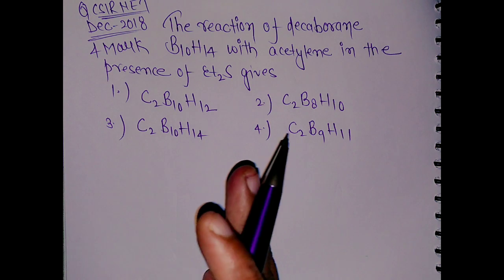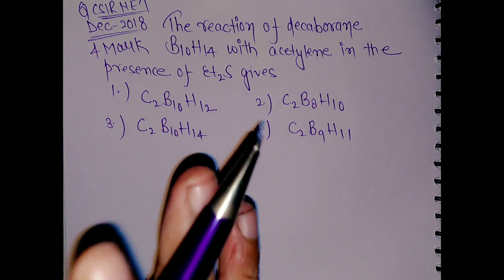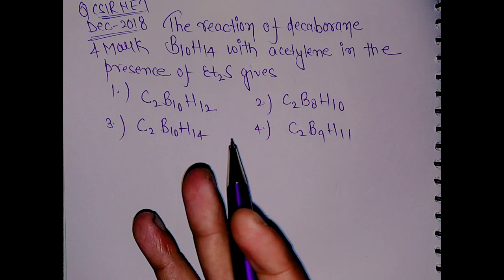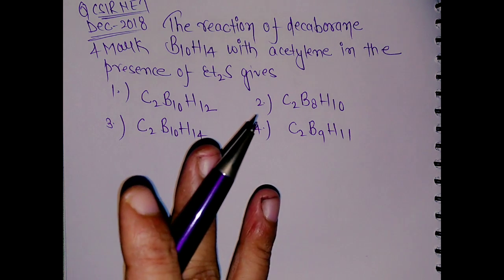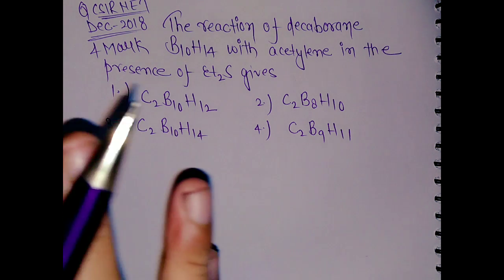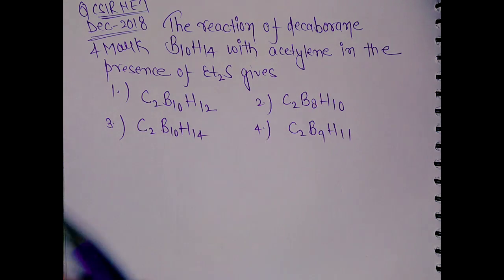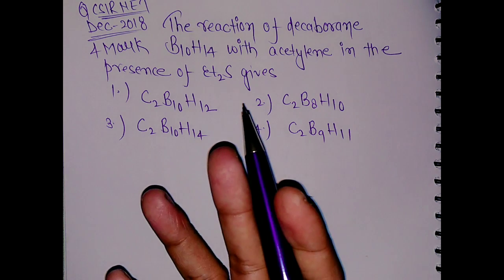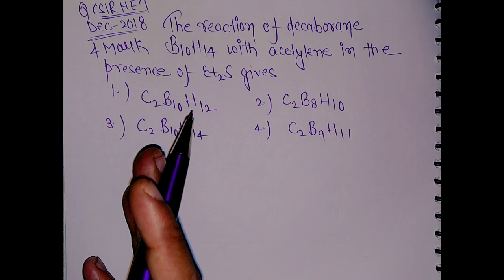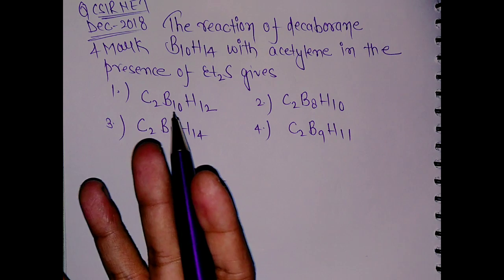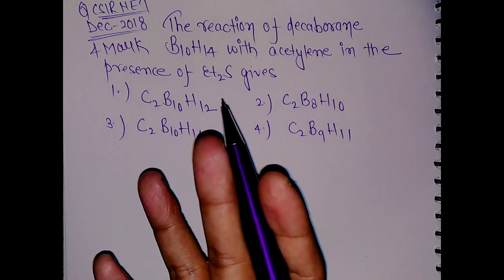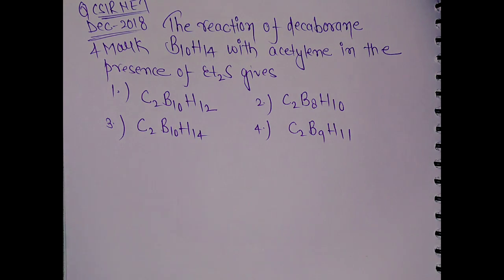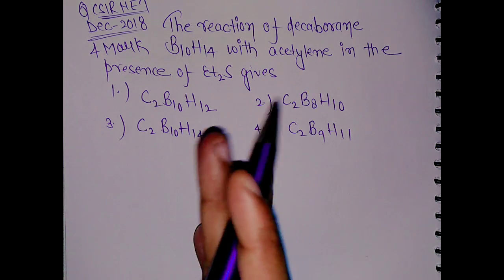This question came in today's CSIR examination in chemical sciences — it is a very good question, one of the finest from inorganic chemistry. These types of questions have also been asked in previous years in different formats. For example, in the GATE examination, C₂B₁₀H₁₂ was asked: what is the geometry? The answer is closo, and the structure is an icosahedron with 20 triangular faces and 12 corners.